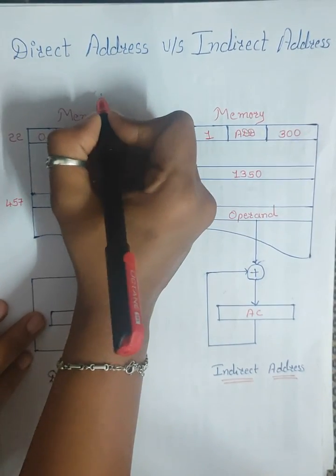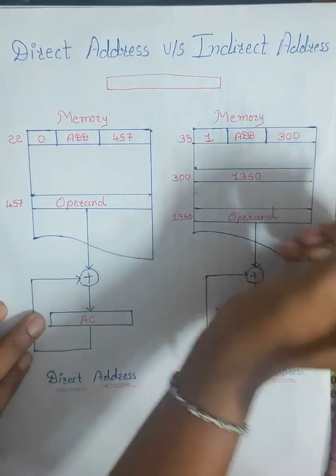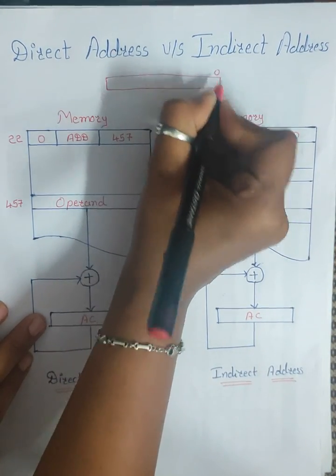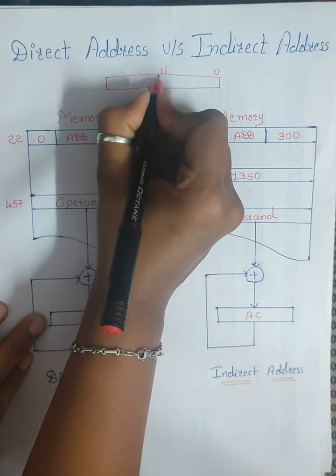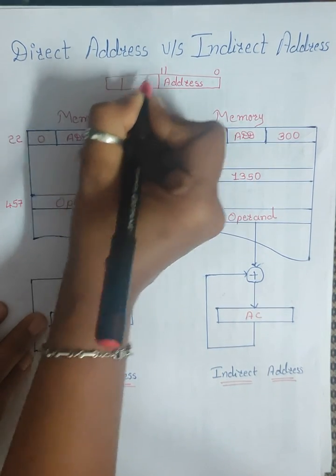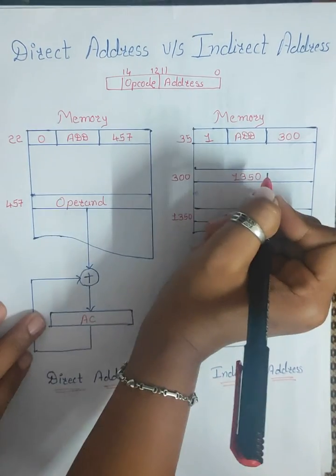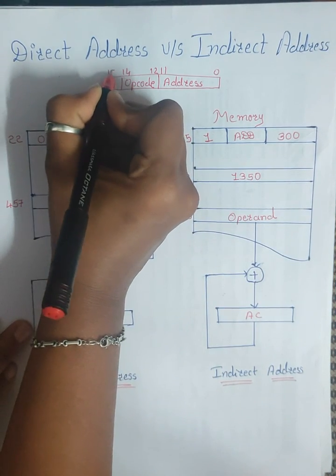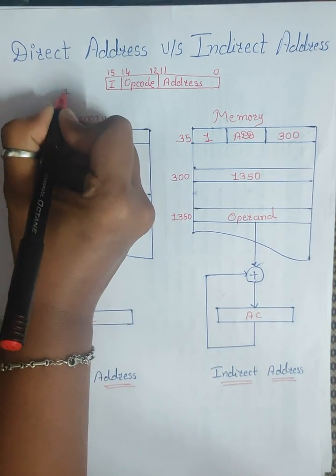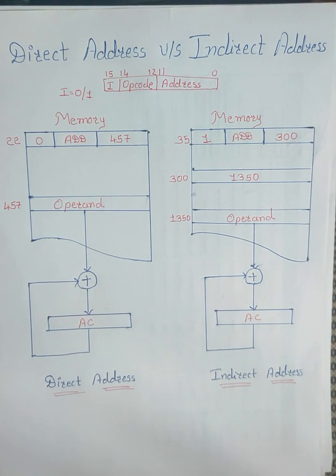Suppose we see our memory instruction format. We are having a 12-bit instruction, where bits 0 to 11 are for the address, bits 12 to 14 — those 3 bits — are for the opcode, which specifies what kind of operation we are going to perform. And bit 15 is 'i', where i is either 0 or 1, representing the addressing mode. If i equals 0, that means it's a direct addressing mode, and if i equals 1, that means it's an indirect addressing mode.